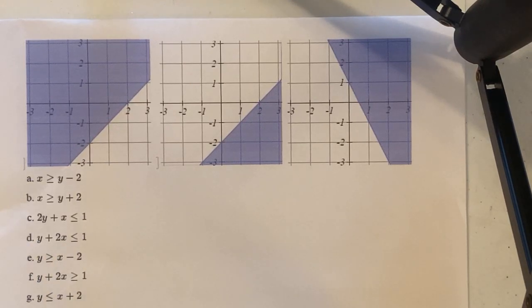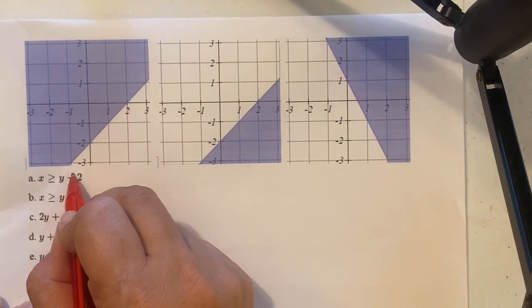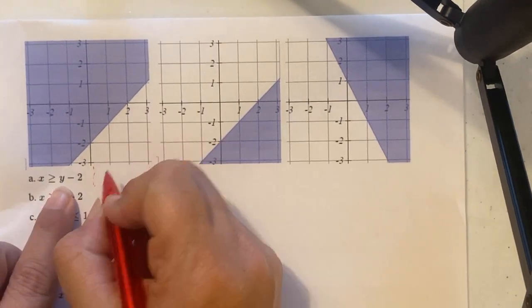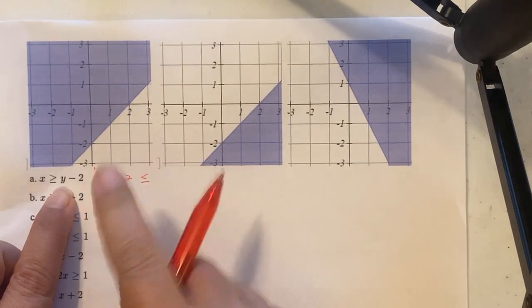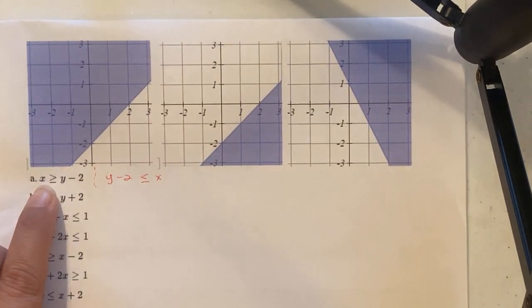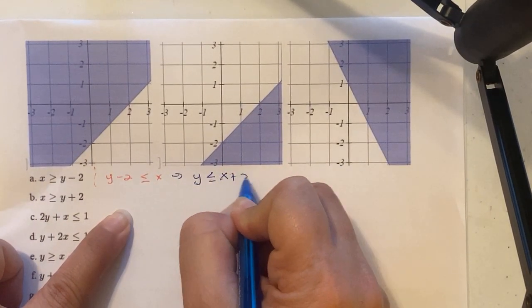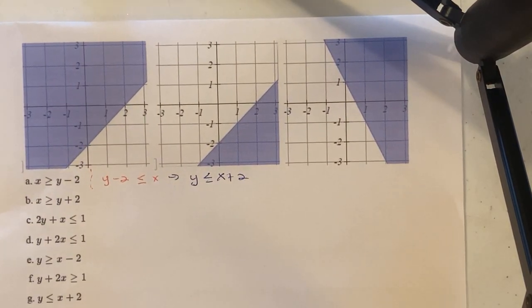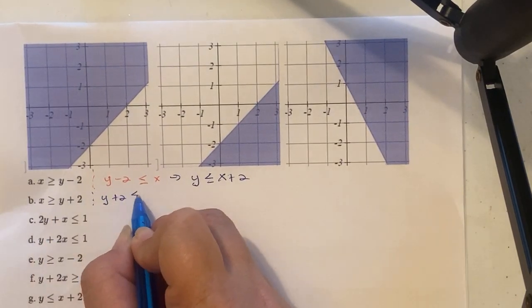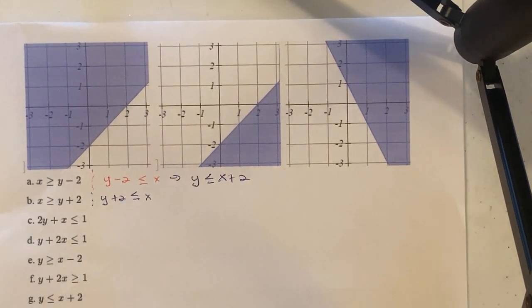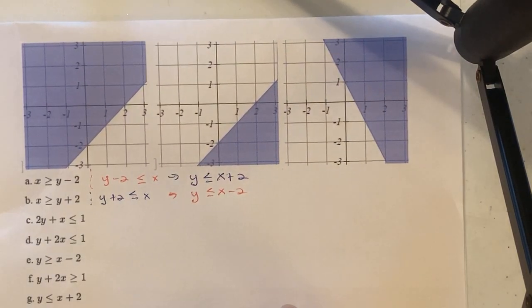We rewrite the first equation as a mirror image so y is isolated. The arrow tip stays pointing to the y side. Adding 2 over gives us y less than or equal to x plus 2. For the second equation, the same approach: mirror image with the inequality pointing to y, then subtracting 2 gives us y less than or equal to x minus 2.